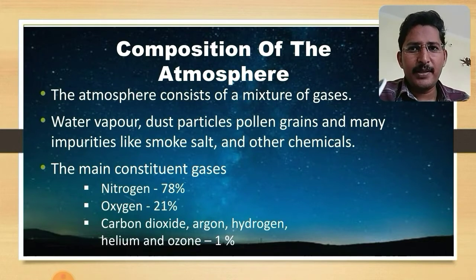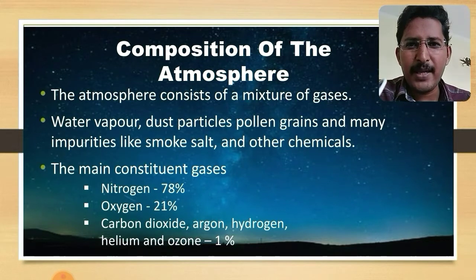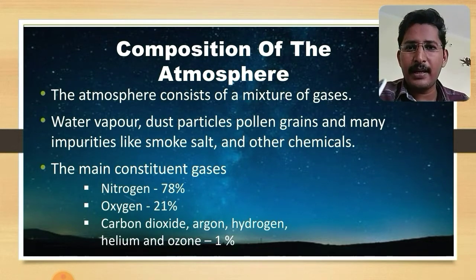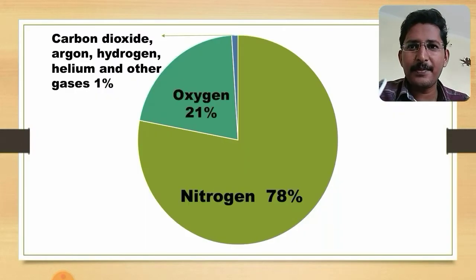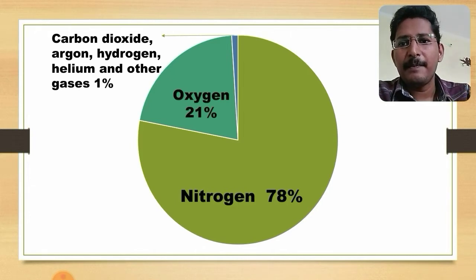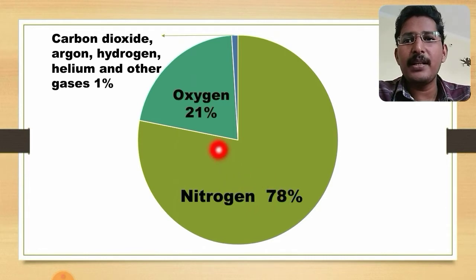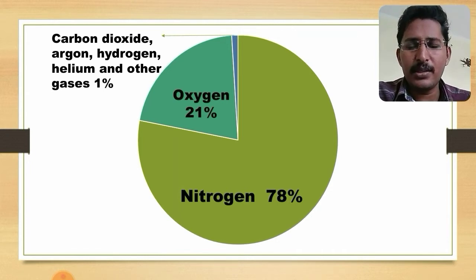In summary, the atmosphere is composed of gases, water vapor, and impurities. Among the gases, nitrogen covers the major portion at 78%, oxygen is present at 21%, and other gases make up 1%. A diagram showing nitrogen 78%, oxygen 21%, and other gases 1% is provided — this diagram is important and is also in your textbook.